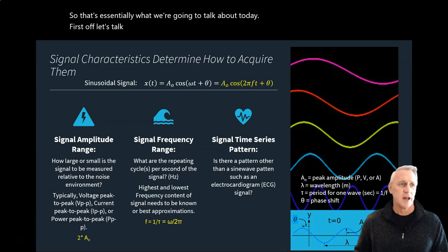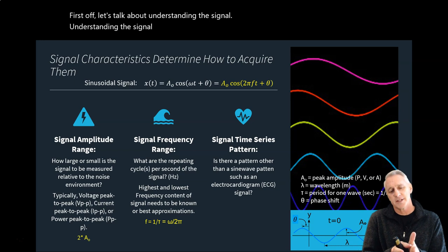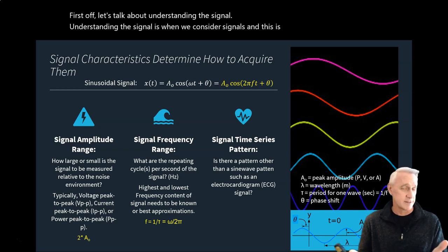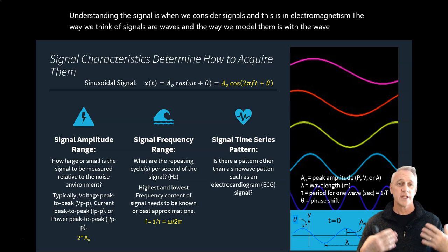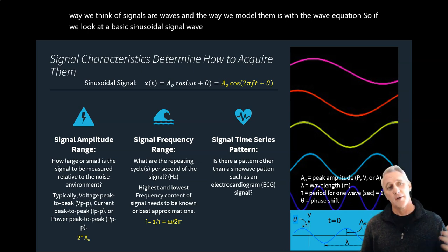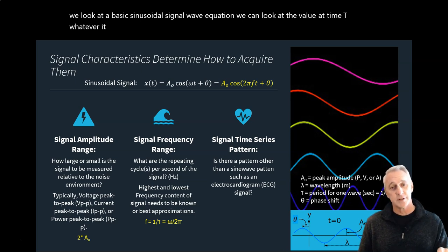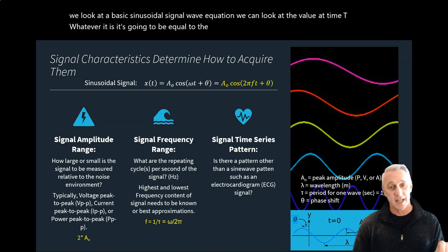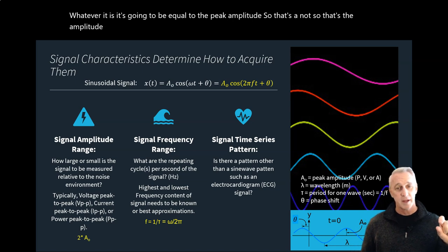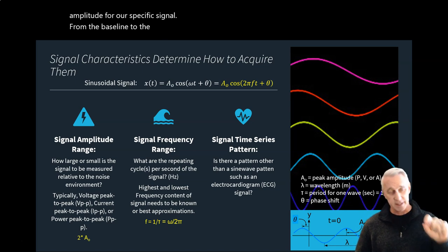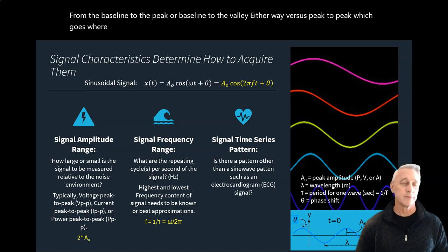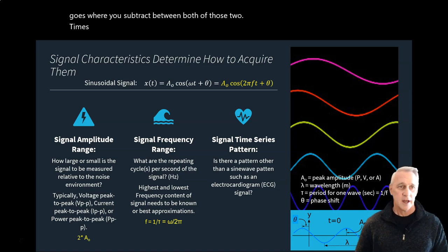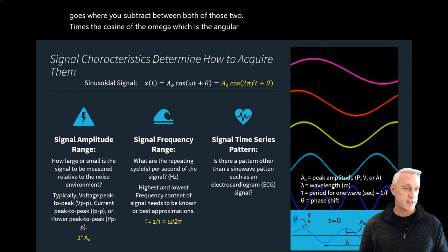First, let's talk about understanding the signal. In electromagnetism, we think of signals as waves and model them with the wave equation. For a basic sinusoidal signal, the value at time t equals the peak amplitude A₀ — measured from baseline to peak or baseline to valley — times the cosine of omega, the angular frequency. Peak-to-peak amplitude subtracts both extremes.